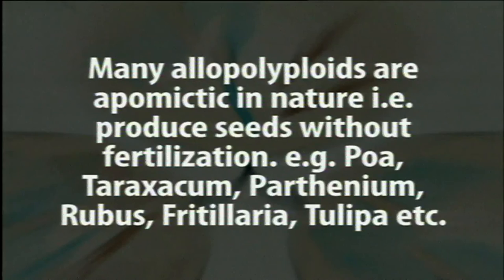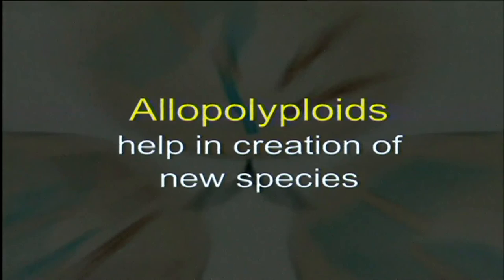This is not found in all types of allopolyploids, but many allopolyploids such as Parthenium, Rubus, Freteveria, Tulipa, and others show this property. Similarly, allopolyploids help in the creation of new species with characteristics from both parents.